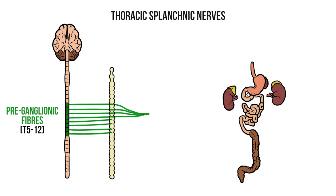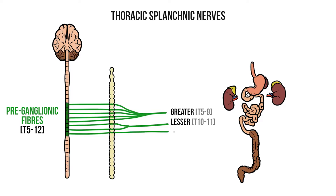Fibres from T5 to T9 will form the greater splanchnic, T10 to T11 make the lesser splanchnic, and T12 continues as the least splanchnic.